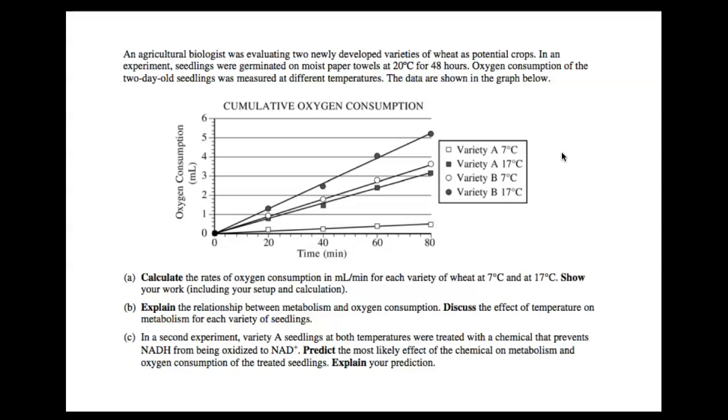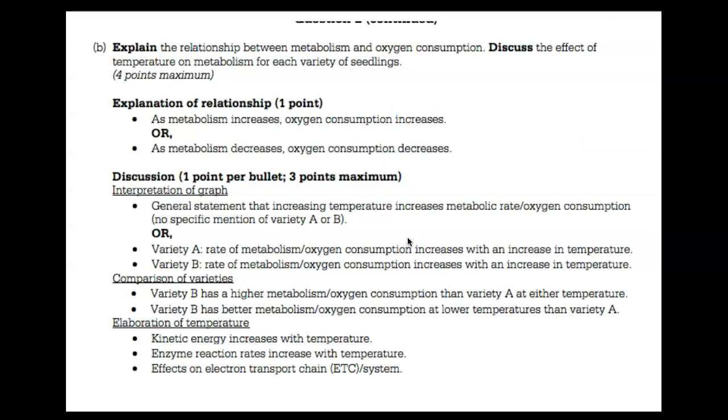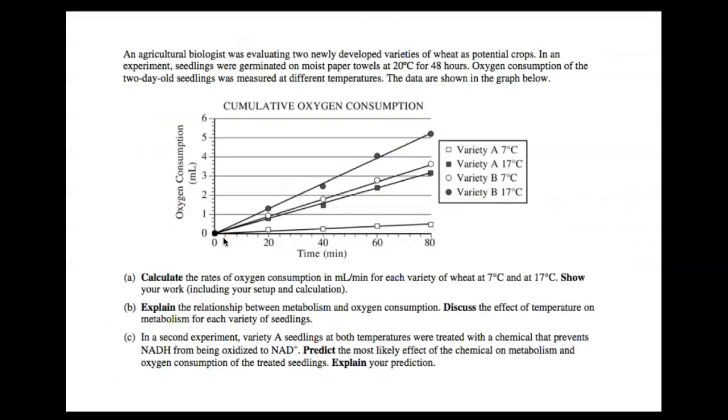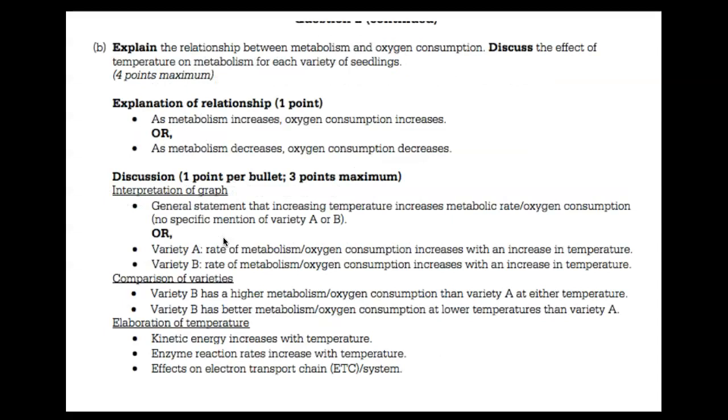So we can see this happening in seedlings too. Alright, so what you would find here is you would need to say as metabolism increases, oxygen consumption increases, or as metabolism decreases, oxygen consumption decreases. Then you would just state what you'd see on the graph. And you would want to say, compare variety A to B. So it looked like variety A—it was slower than variety B. And then you would want to just have a little bit of elaboration: why does this happen? And what I would tell you is kinetic energy increases with temperature, therefore chemical reactions increase, and enzymes—yeah, chemical reactions increase. So that would be the explanation.